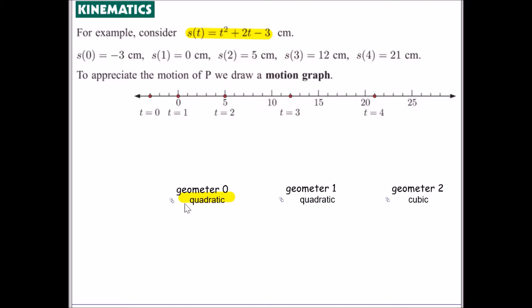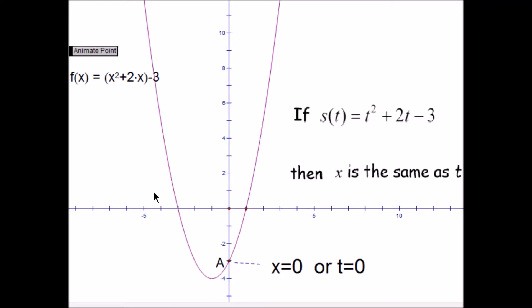Let's look at a sketch on Geometer Sketchpad. So here is our displacement function, x squared plus 2x take 3, or t squared plus 2t take 3 in terms of t. So at t equals 0 our point will start here. And if we observe, A is increasing its rate of change or its speed.